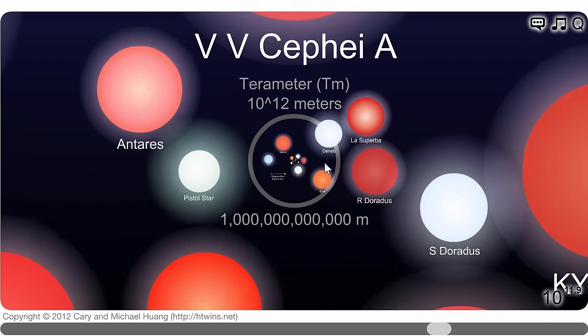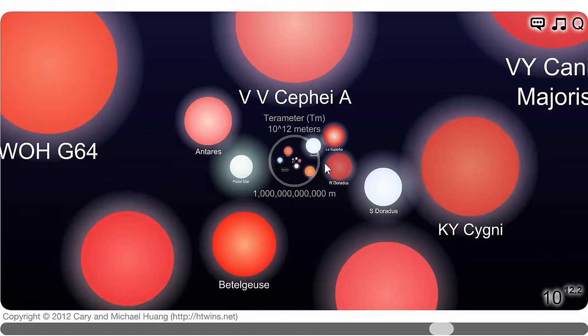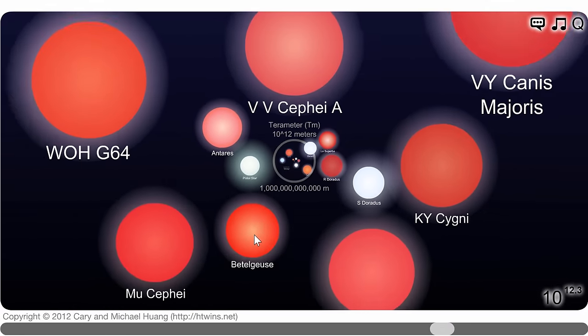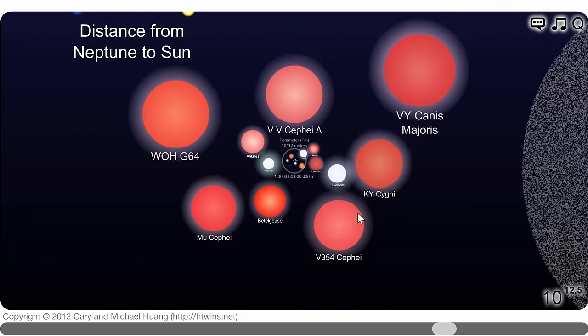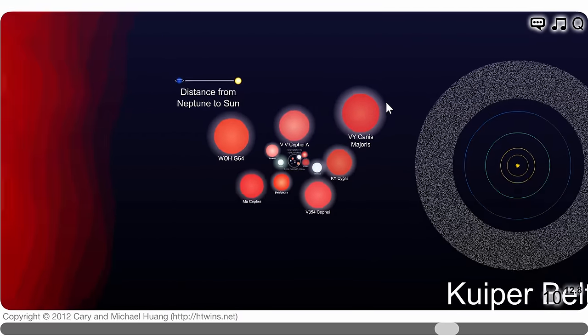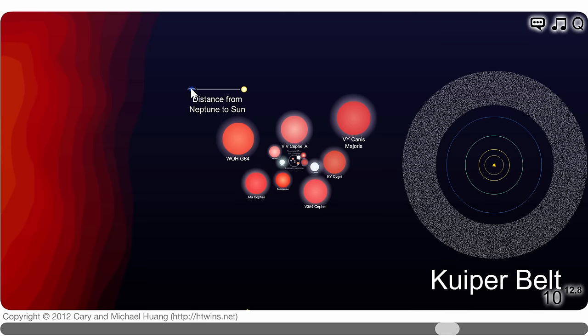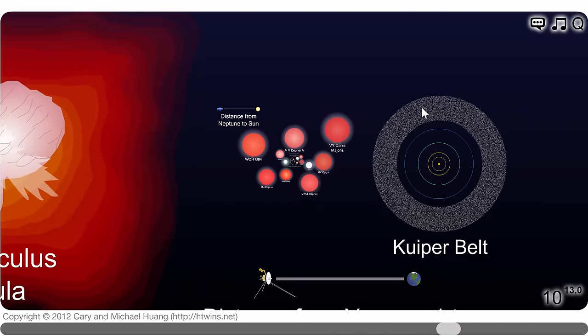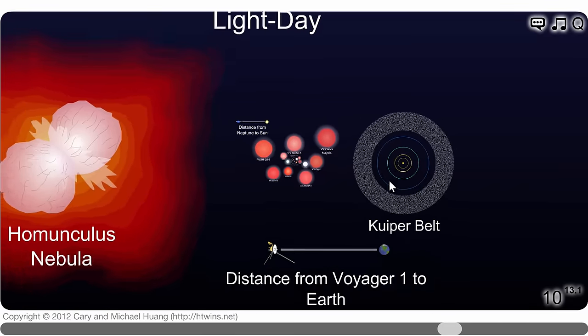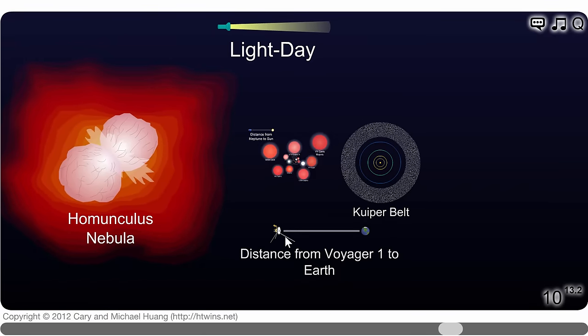And now we start reaching into a region of space where we have supergiants like Betelgeuse, VY Canis Majoris. And this right here is a distance of Neptune from the Sun. So this is about 30-ish astronomical units. Here is actually what we consider to be the size of our solar system, at least up to Kuiper belt. And currently the farthest object from our planet is Voyager 1. This is how far away it is from us.